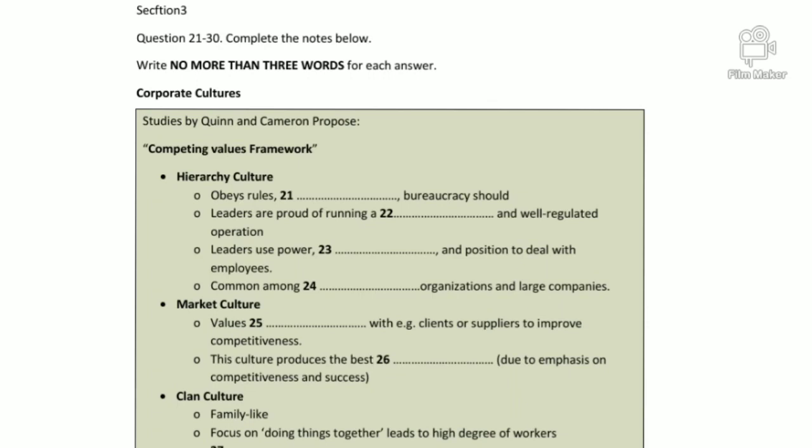I'll start by talking about the hierarchy culture. This is found in a business that observes formal rules, regulations and bureaucracy. In such a structured and controlled environment, leaders usually take pride in running stable, organized and efficient operations — this may even be part of their mission statement. They rely on their power, status and the importance of their position to manage their workers. This culture is typical of government bodies and big corporations.